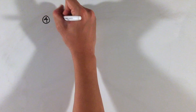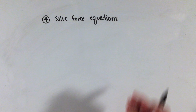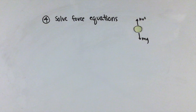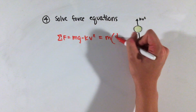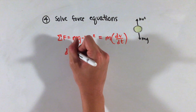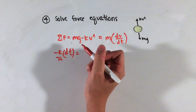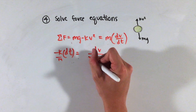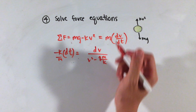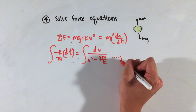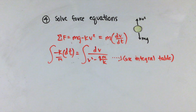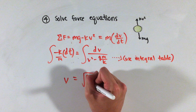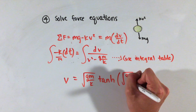Our final step, solving the force equation, is a bit trickier. Equating the sum of the forces to our new version of Newton's second law, we can see that the resulting product is actually a differential equation. Solving these equations won't be too hard — all we need to do is separate the two variables in the derivative: v (velocity) and t (time). Getting all of the v's to one side and t's to the other, we can integrate both sides and use our initial condition given in the problem to find our integration constant.